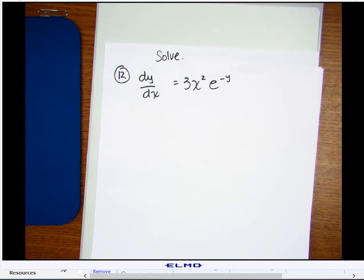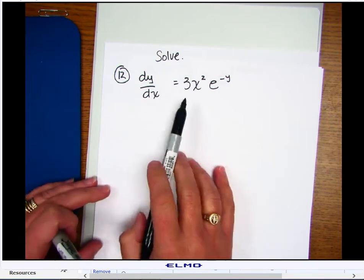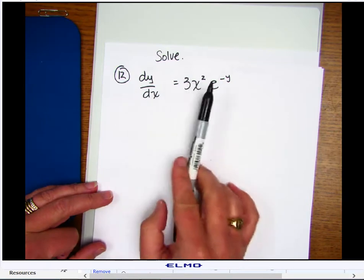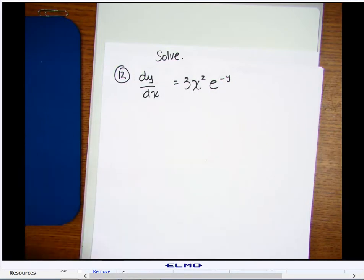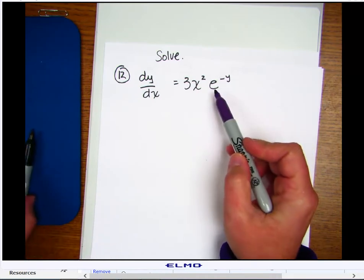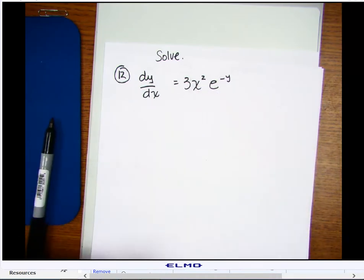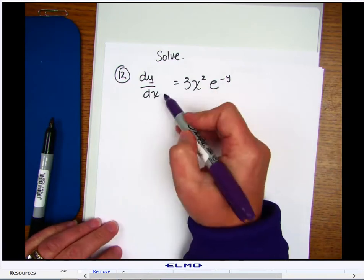Alright, so as the name implies, separable differential equations means that we can separate our variables. We want to get dy or any part of the equation associated with the y variable on one side, and we want to get dx and any part of the equation associated with the x variable on the other.